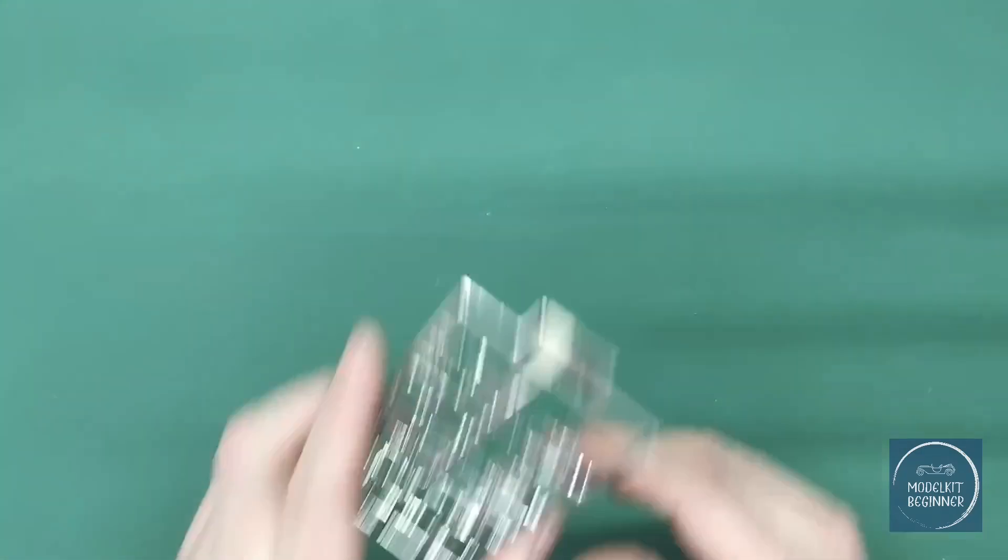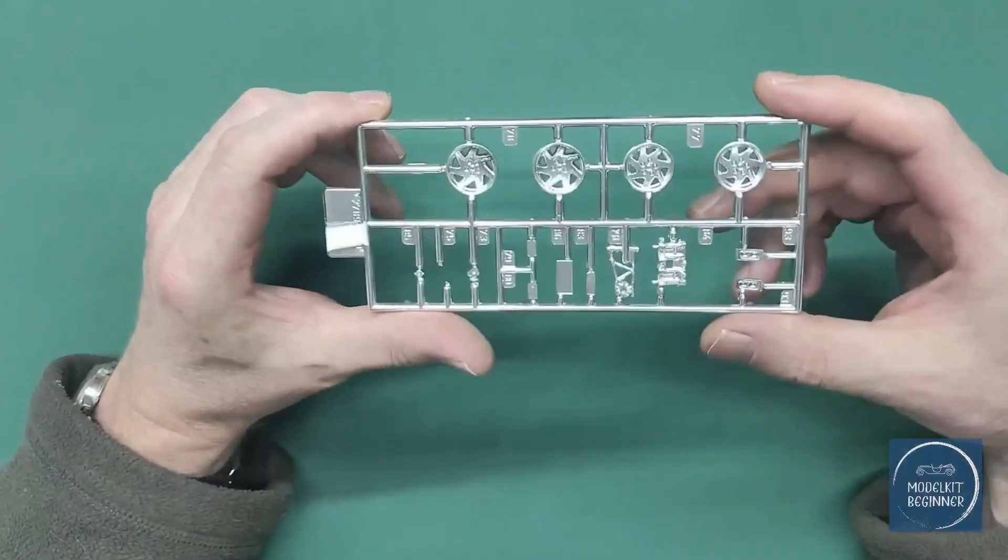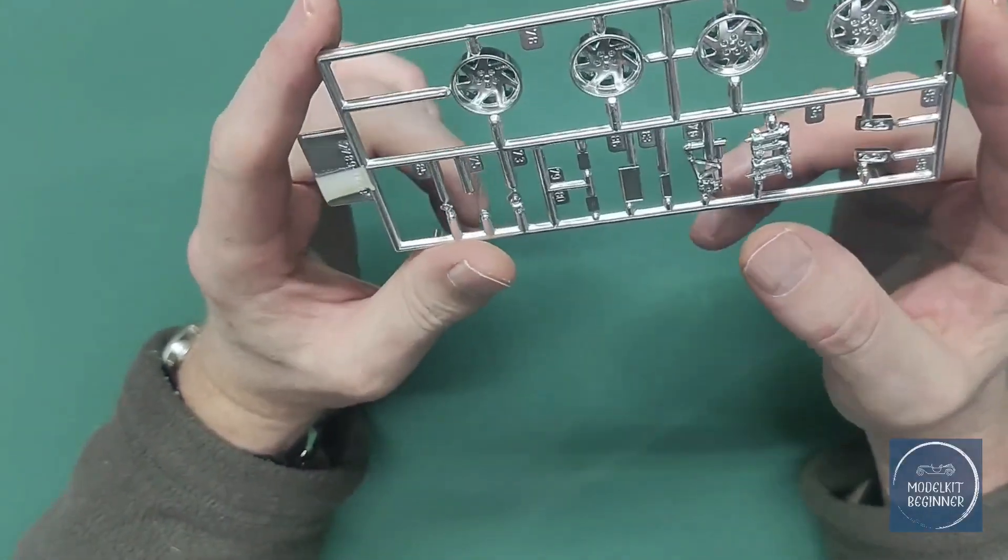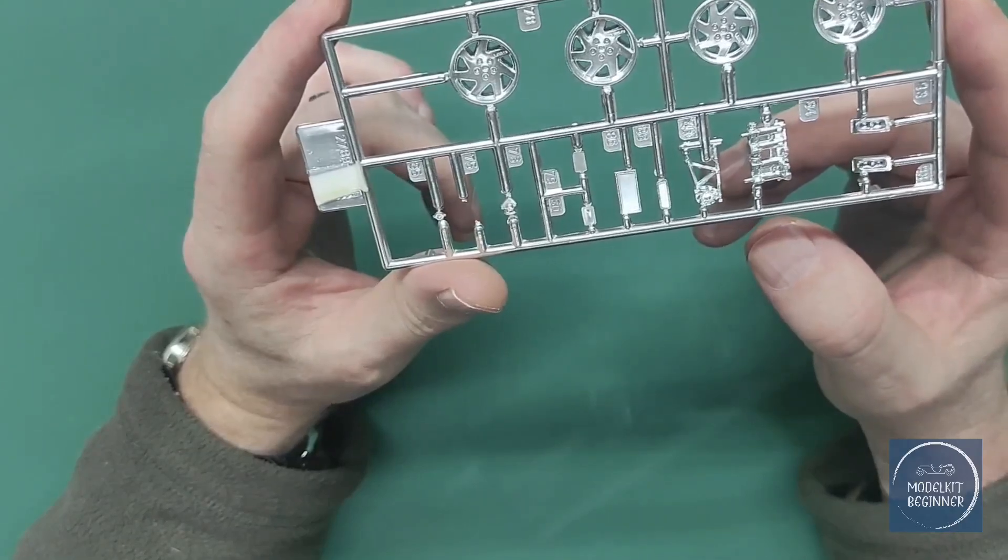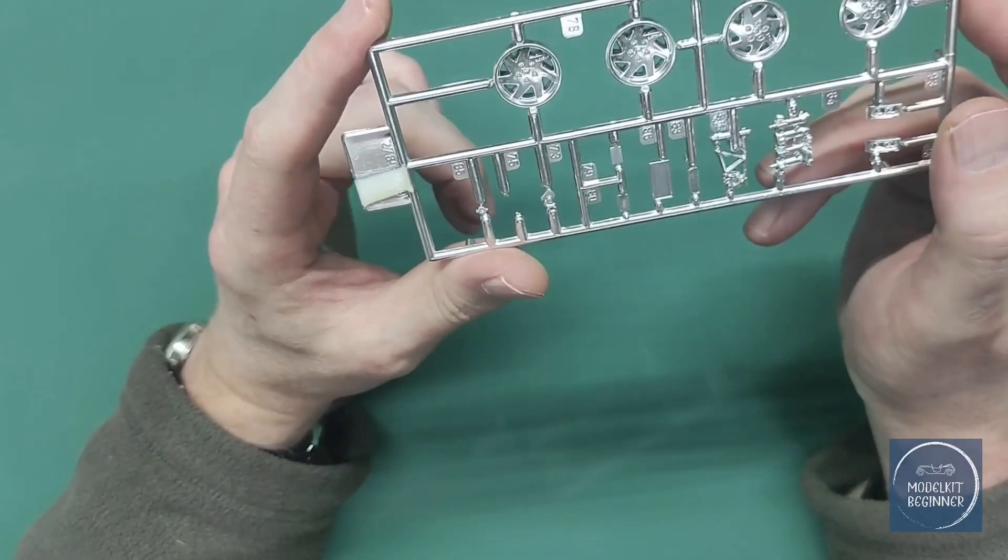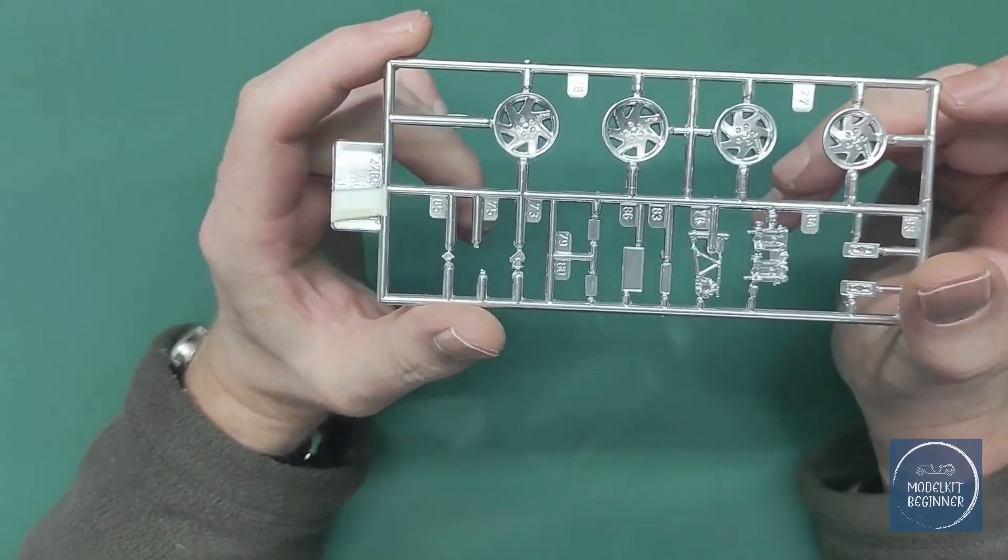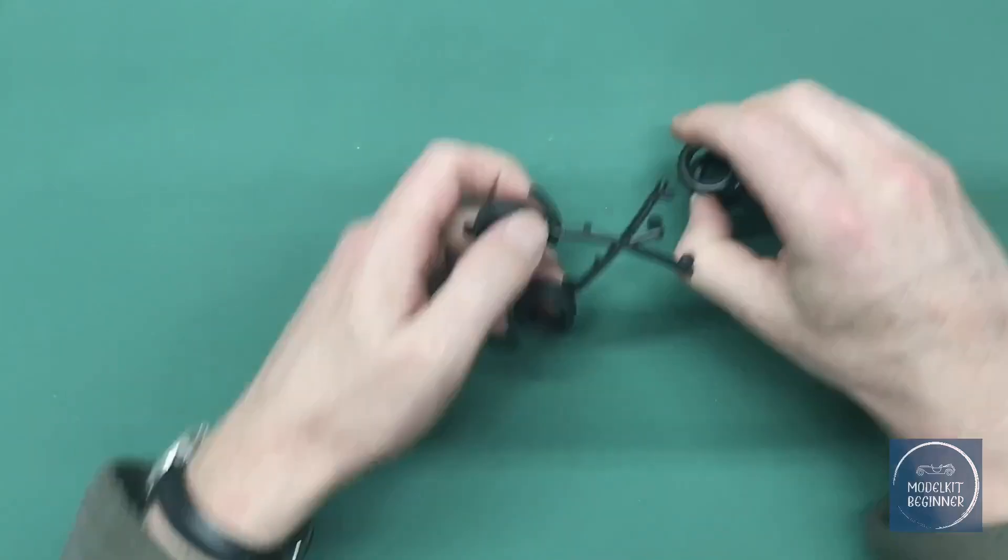Then we have chrome parts—plated parts if you will. We have the wheels, some engine parts, mirrors, lights—what you'd expect from a 1981 car. There weren't chrome-laden cars by then anymore at all. Then we have the tires, which are the on-the-sprue type, not my favorite.